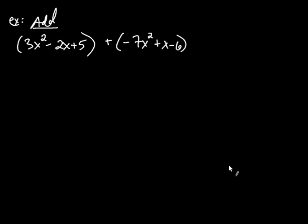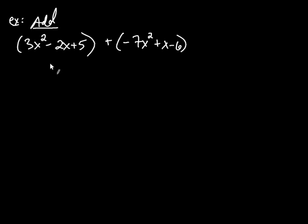Now that we know what polynomials are and how to combine like terms, let's put that together to add and subtract polynomials. In this problem, we're asked to add one polynomial to another. Start by looking for like terms. Because it's addition, we can go ahead and drop the parentheses.